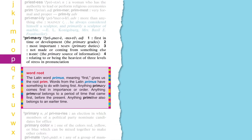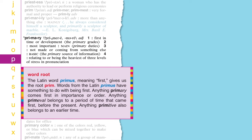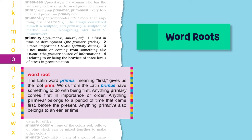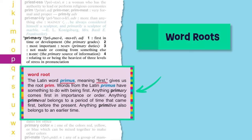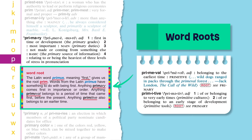Many words in English come from older words in Latin or Greek. Those words are called word roots. Here at the entry for primary, there's a paragraph about how the Latin word primus, meaning first, gave us the root prim, which led to the words primary, primeval, and primitive. At the entries for primeval and primitive, you'll find the word root in red pointing you to the word root paragraph at primary.